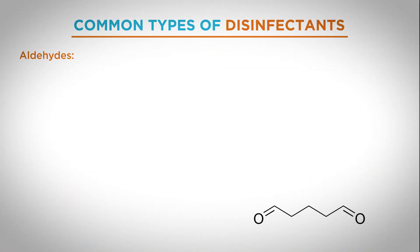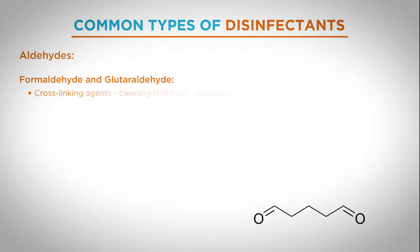Another important class of disinfectants are aldehydes, namely formaldehyde and glutaraldehyde. These are cross-linking agents, meaning they denature proteins and soils and fixate them to surfaces. Aldehydes are also used as fixating agents in microscopy. This is relevant because if we don't perform the cleaning process properly, there will be soils on surfaces that get cross-linked by the aldehyde disinfectant, making them very difficult to remove in subsequent cleaning steps.